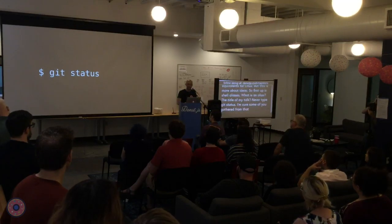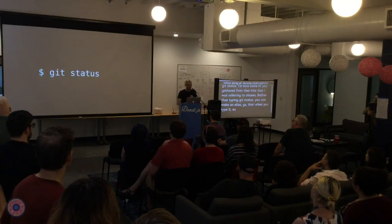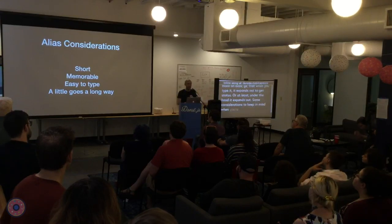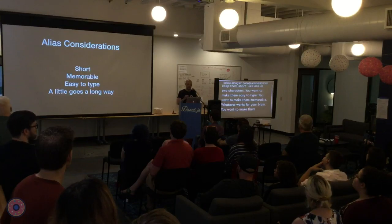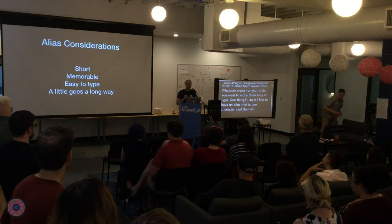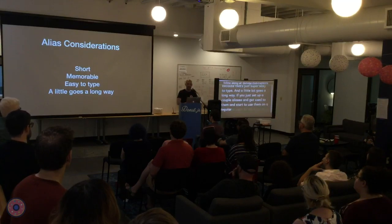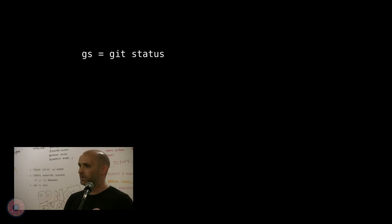First up is shell aliases. What is an alias? The title of my talk is "Never Type Git Status." Rather than typing git status, you can make an alias — gs — that when you type it, expands out to git status. Some considerations: you want to keep them short, like one or two characters, easy to type, and memorable. I like to have an alias that is one character and then an alternative version that's that same character repeated twice, because that's super easy to type. A little bit goes a long way — set up a couple aliases, get used to them, and you'll see the benefits and want to do more.